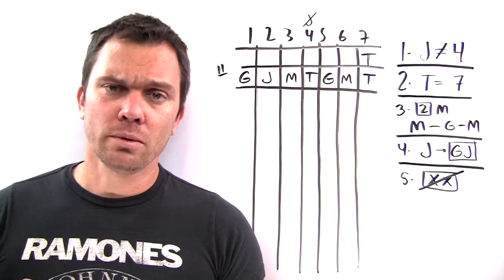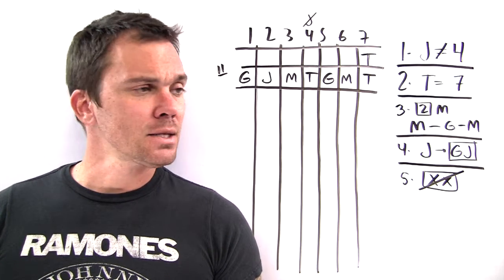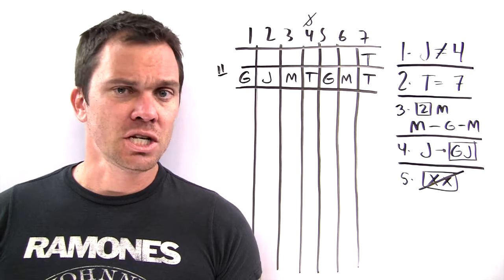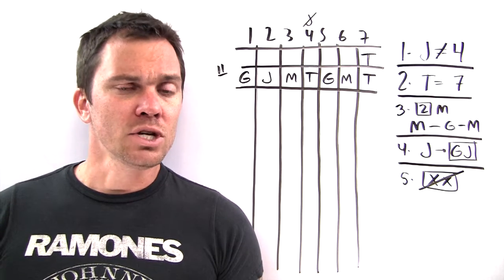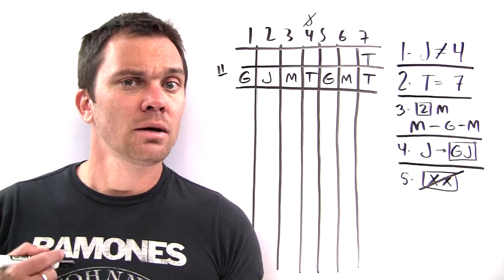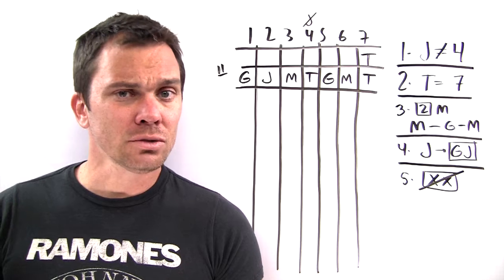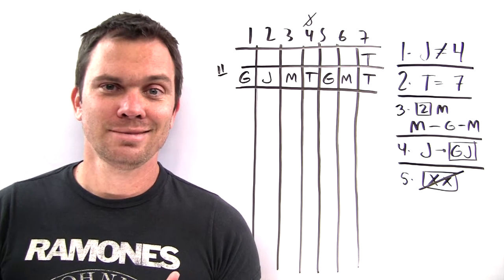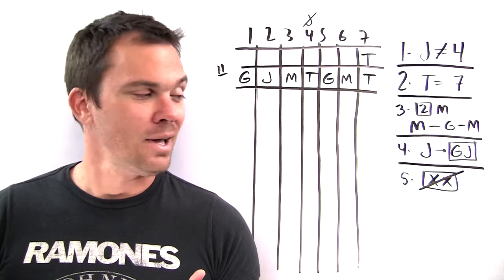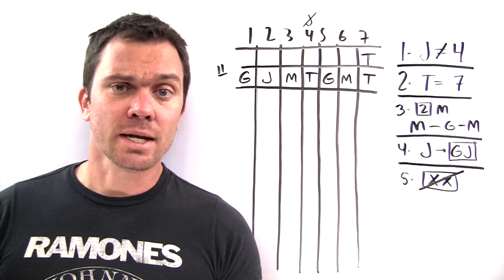And rule four. If you've got Jamaica, then you've got Guadalupe before it. That does not mean that you always have to have GJ. You can have a G without a J. You just cannot have a J without a G. And if you don't have conditionals, go watch those videos on conditionals. So helpful. And finally rule five. Pretty standard rule for ordering. You can't put any two of them consecutive.